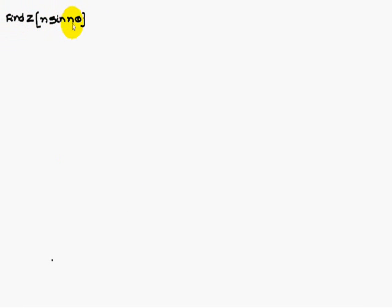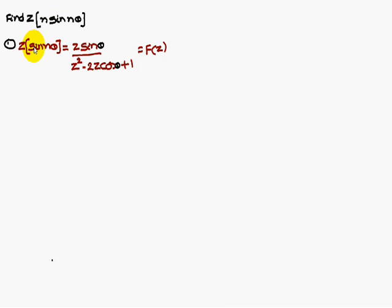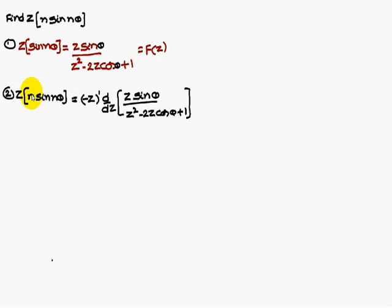Now consider one more problem: Z-transform of n·sin(nθ). Multiplied by n, you solve using the multiplication formula. The Z-transform of sin(nθ) is Z·sinθ divided by (Z² − 2Z·cosθ + 1), which is capital F(z). For n·sin(nθ), we use minus Z whole power 1, one-time differentiation. If n squared, use minus Z whole squared with two-time differentiation; if n cubed, minus Z whole cubed with three-time differentiation.